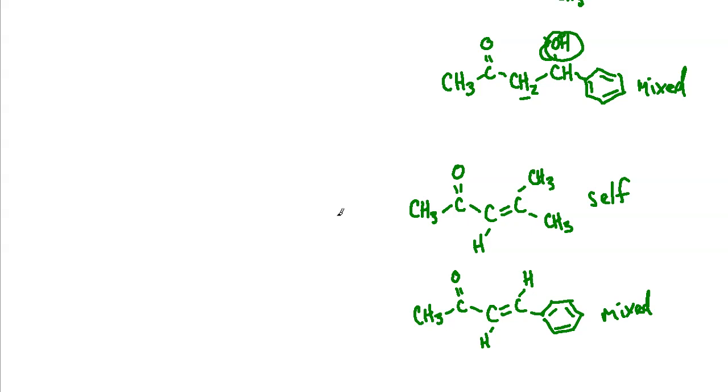In the next lecture, I want to take a look at intramolecular aldols, which is where you basically have a long chain that has two carbonyl groups with alpha hydrogens, and the chain essentially will attack itself in an intramolecular aldol reaction. You usually end up with cyclic products as a result of that.